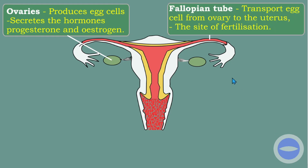The function of the fallopian tube is to transport eggs from the ovary to the uterus. After the eggs exit the ovaries, they move through the fallopian tube. Another function is that the fallopian tube is the site of fertilization — if sperm is delivered in the vagina during intercourse, it enters the cervix, moves through the uterus and into the fallopian tube, where it can fuse with an egg cell.